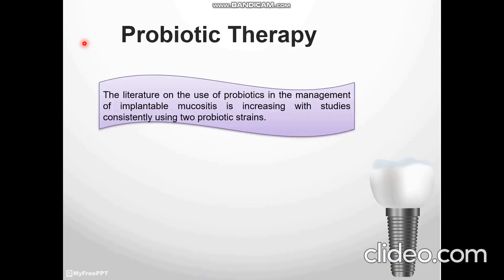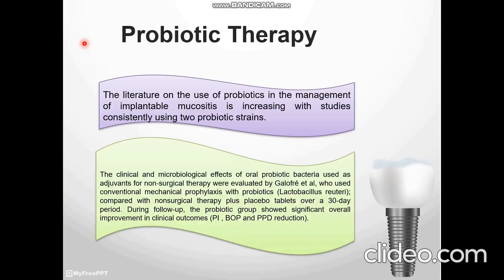The literature on the use of probiotics in the management of peri-implant mucositis is increasing, with studies consistently using probiotic interventions. The clinical and microbiological effects of oral probiotic bacteria used as adjunct to non-surgical therapy were evaluated by Golovar and Carl, who used conventional mechanical therapy with probiotics Lactobacillus reuteri compared with non-surgical therapy alone over a 30-day period. During follow-up, the probiotic group showed significant overall improvement in clinical outcomes, plaque index, bleeding on probing, and probing pocket depth reduction.